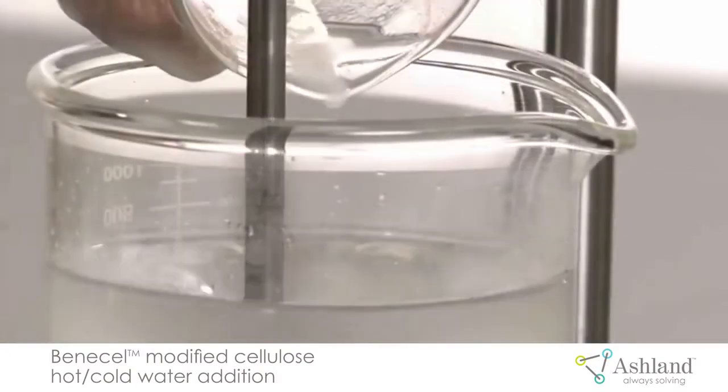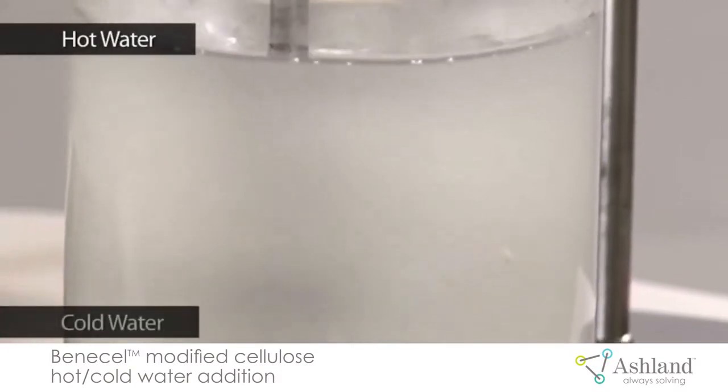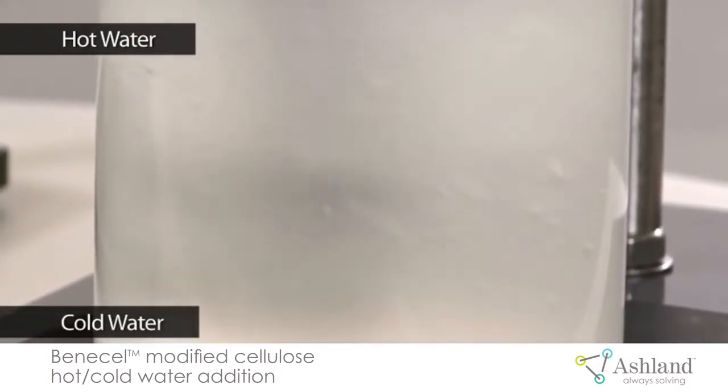When the modified cellulose is added to the balance of cold water, the solution is hazy because it has not yet begun to hydrate. You can let it cool down under mixing or you can place it in an ice bath to cool more quickly.